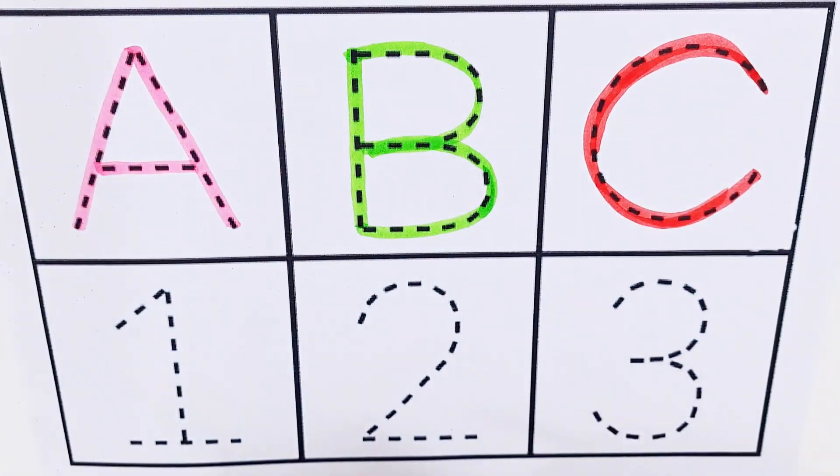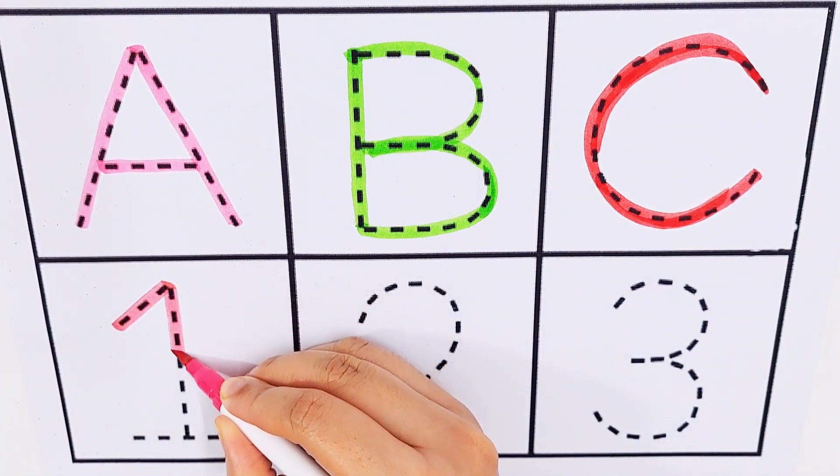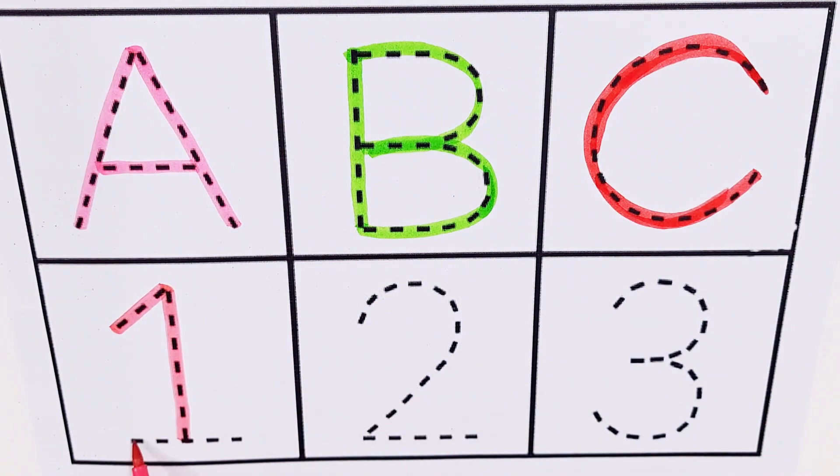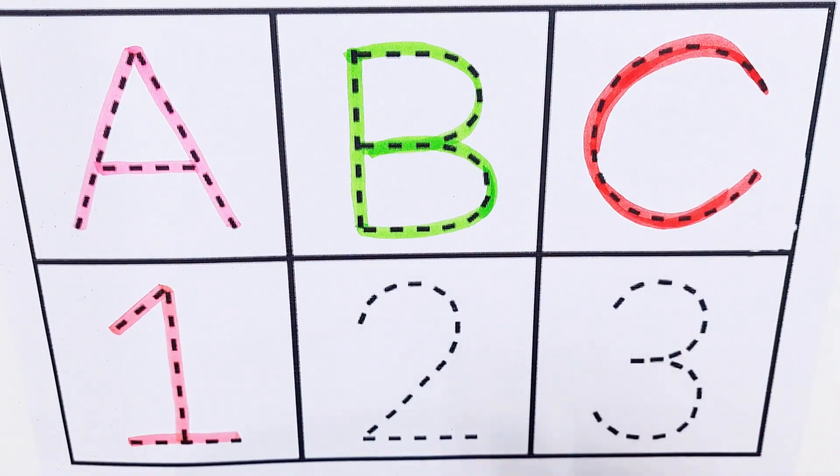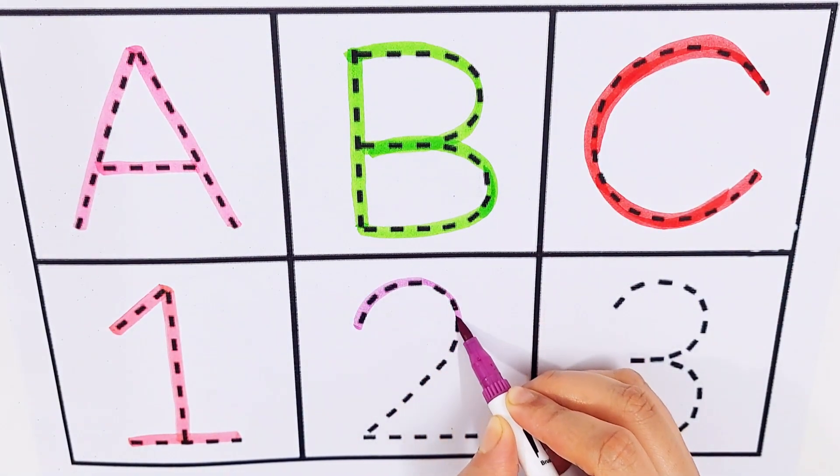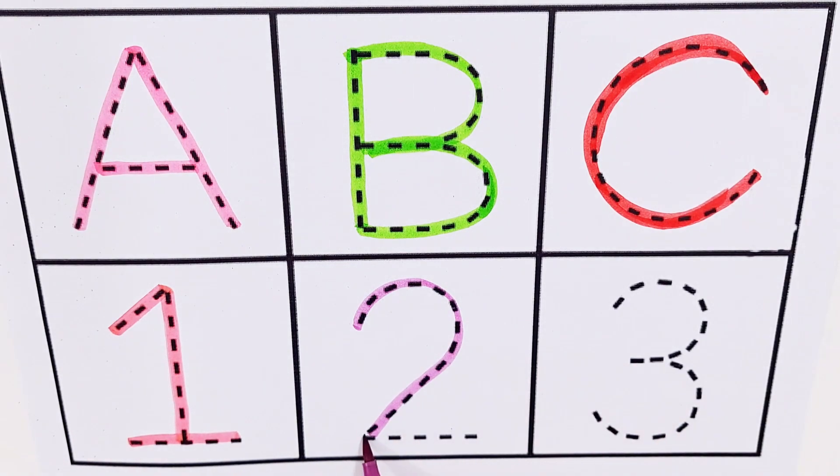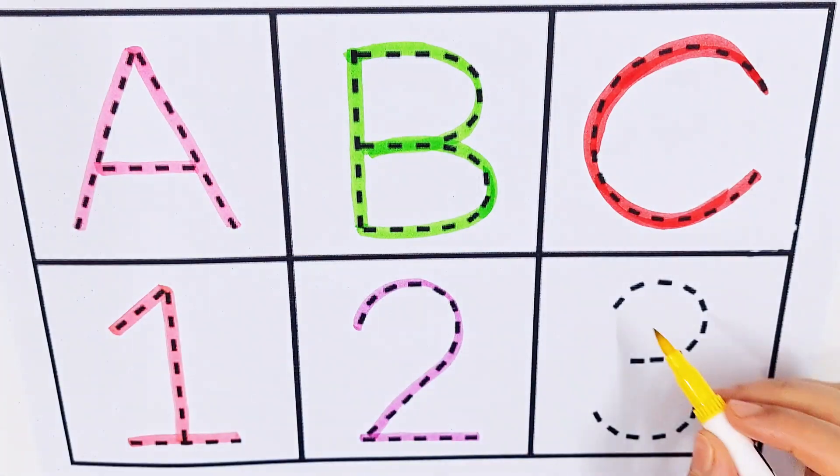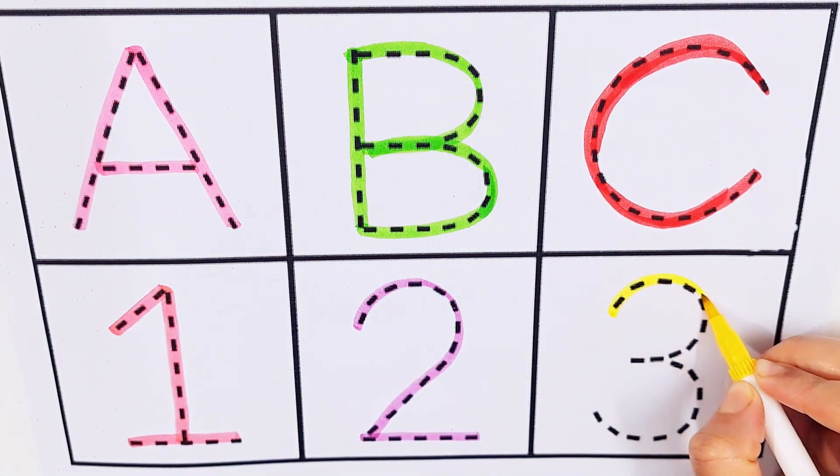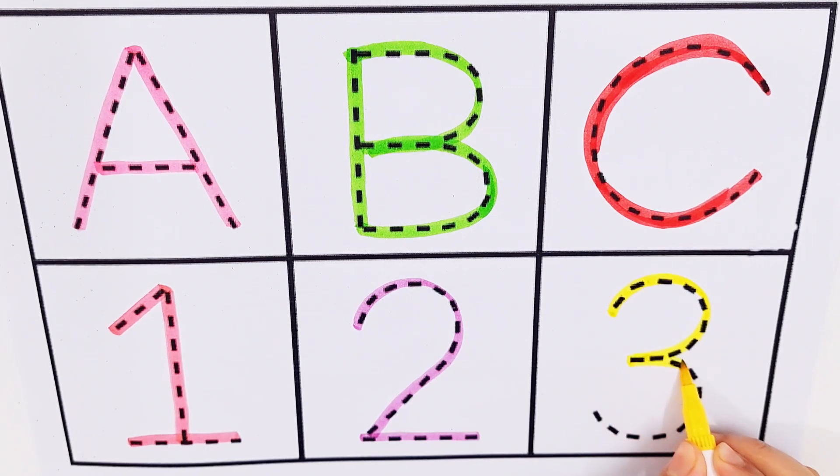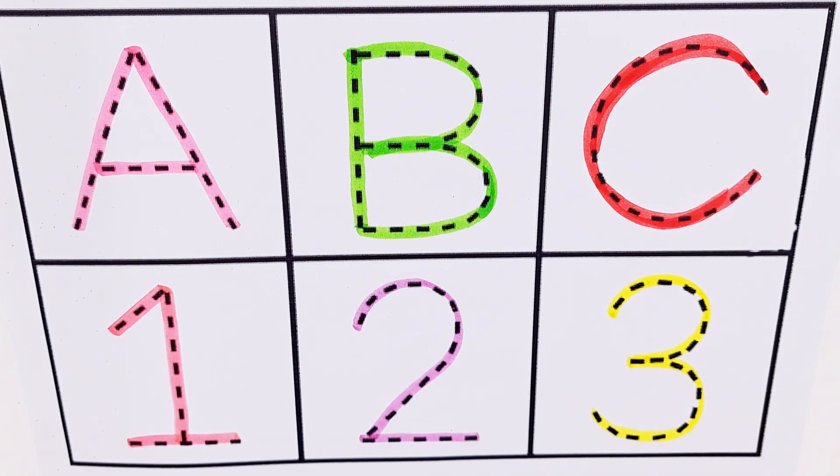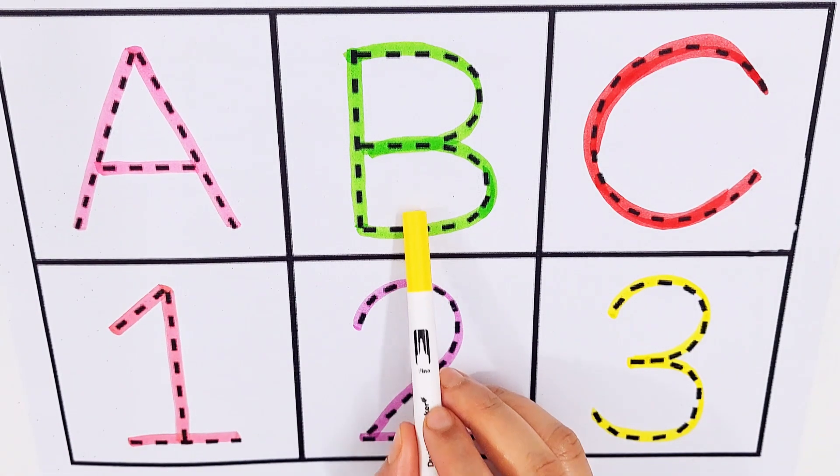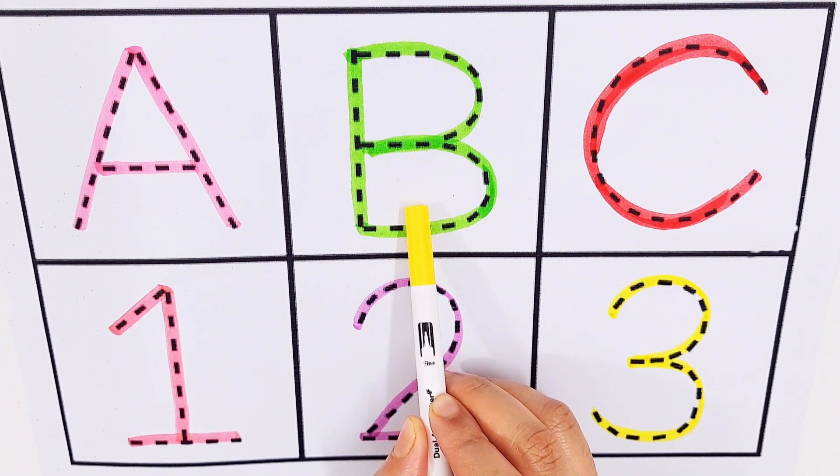Purple color. Number one, number one, O-N-E, one. Violet color. Number two, number two, T-W-O, two. Yellow color. Number three, number three, T-H-R-E-E, three. A, A for avocado. B, B for birds. C, C for candy.